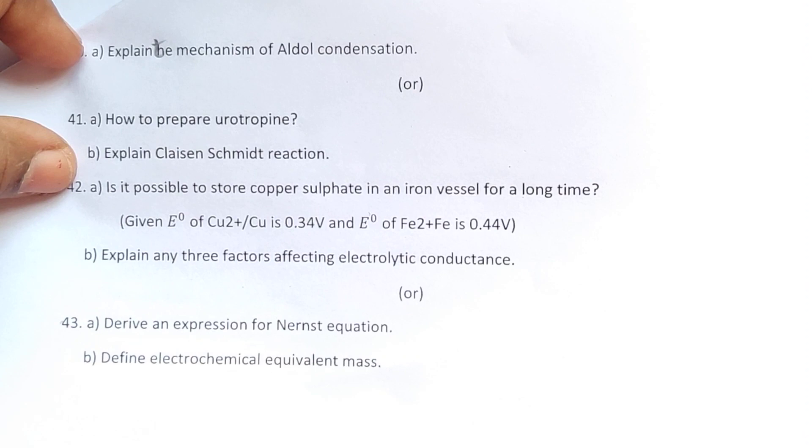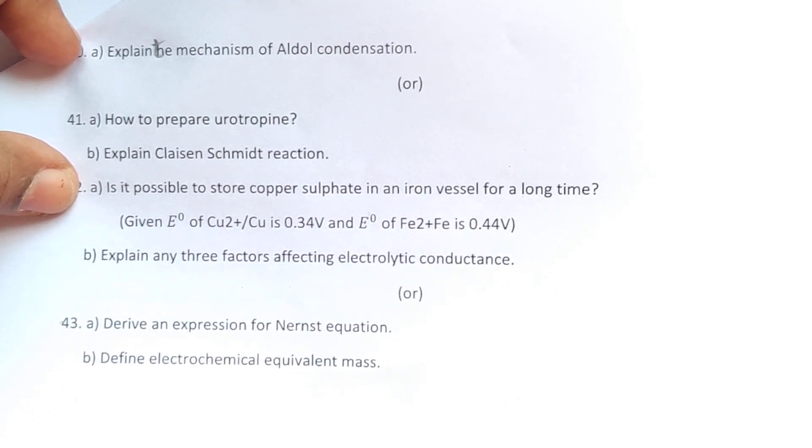Forty-two A: Is it possible to store copper sulfate in an iron vessel for a long time? B: Explain any three factors affecting electrolytic conductance. Or, forty-three A: Derive an expression for Nernst equation. B: Define electrochemical equivalent mass. Those are the portions.